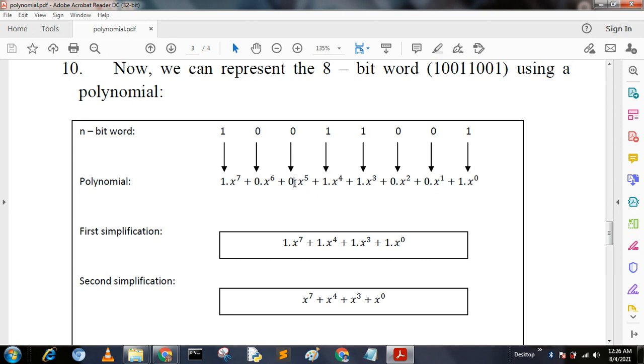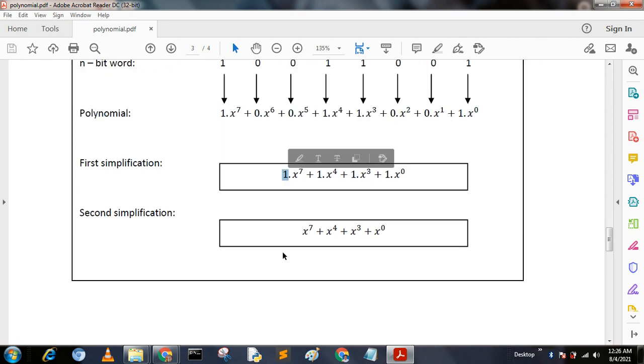Now we can erase the zero terms. With first simplification, our polynomial is 1 times x^7 + 1 times x^4 + 1 times x^3 + 1 times x^0. Then we omit the value of 1. With second simplification, that is x^7 + x^4 + x^3 + x^0. This is the complete representation of a polynomial.